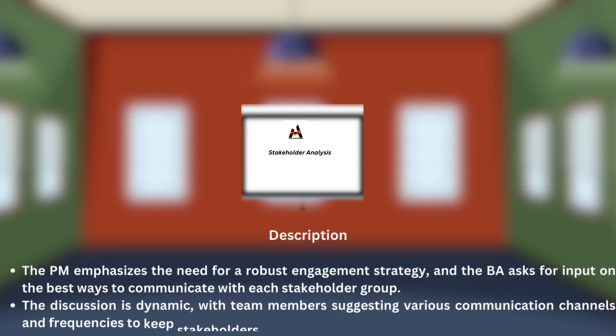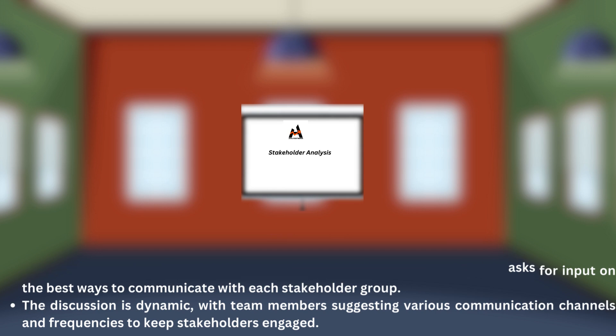The PM emphasizes the need for a robust engagement strategy and the BA asks for input on the best ways to communicate with each stakeholder group. The discussion is dynamic, with team members suggesting various communication channels and frequencies to keep stakeholders engaged.